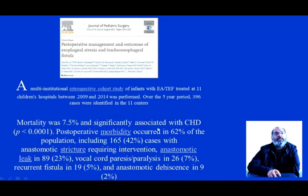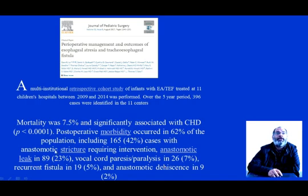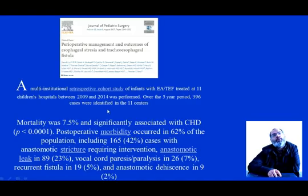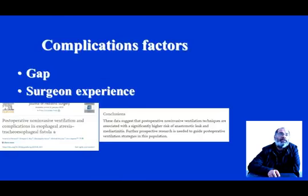Surgery for oesophageal atresia carries many complications. Mortality is seen in 7.5% of cases. Morbidity includes anastomotic stricture, anastomotic leak, vocal cord paresis and paralysis, recurrent fistula, and anastomotic disease. This confirms that surgery of oesophageal atresia has many complications, but these must be managed because these patients can be saved with surgery. Complication factors depend on the gap and also on the surgeon's experience.